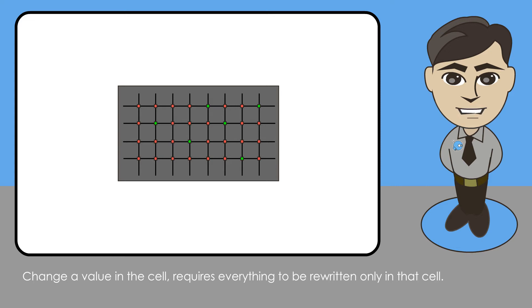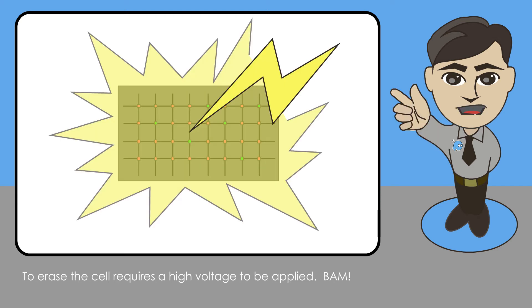Change of value in the cell requires everything to be rewritten only in that cell. To erase the cell requires a high voltage to be applied. BAM!